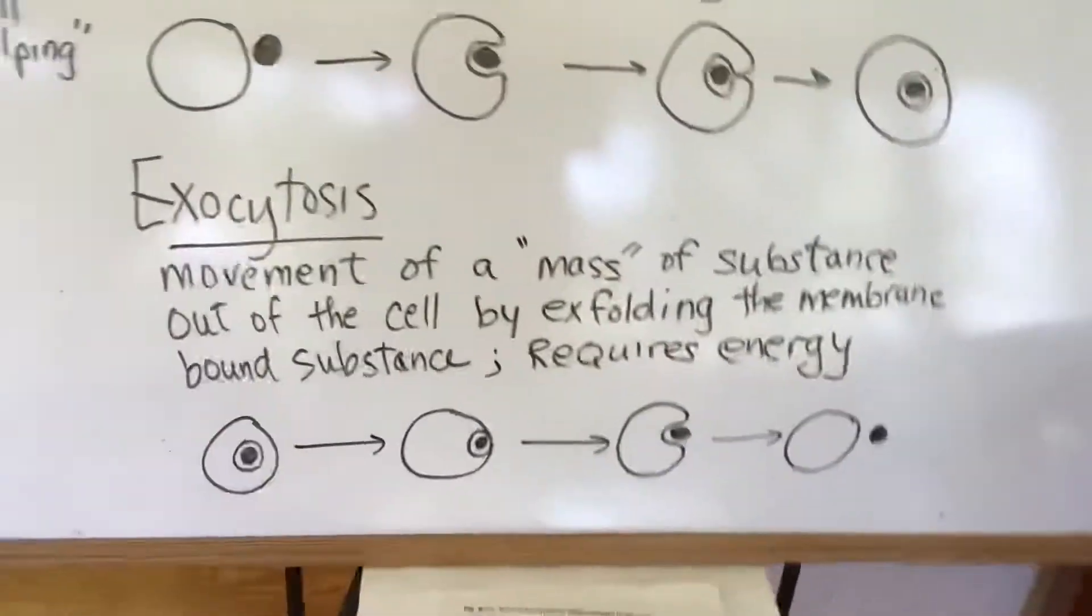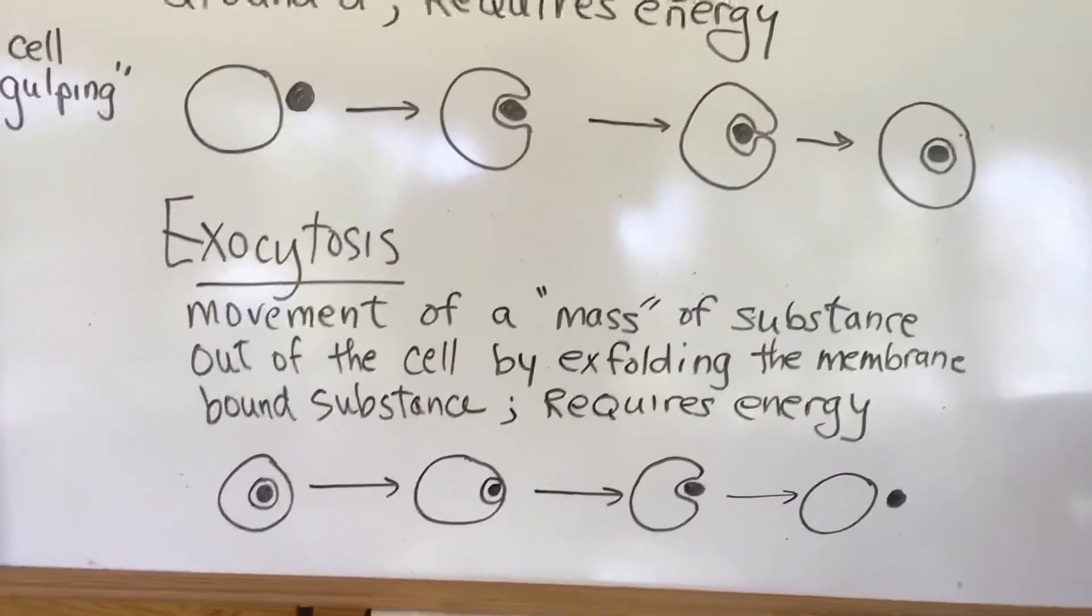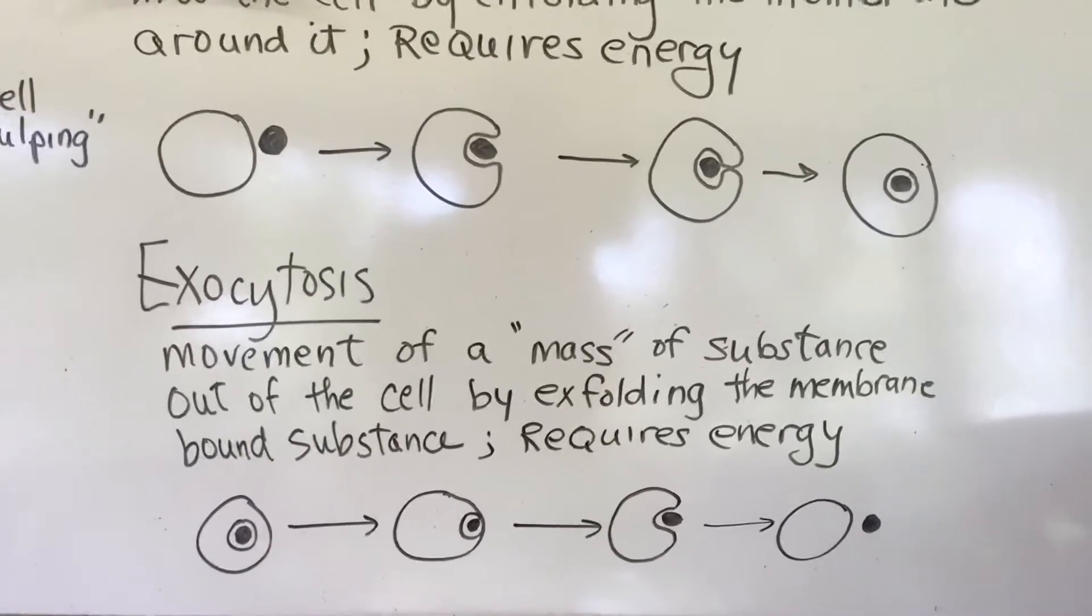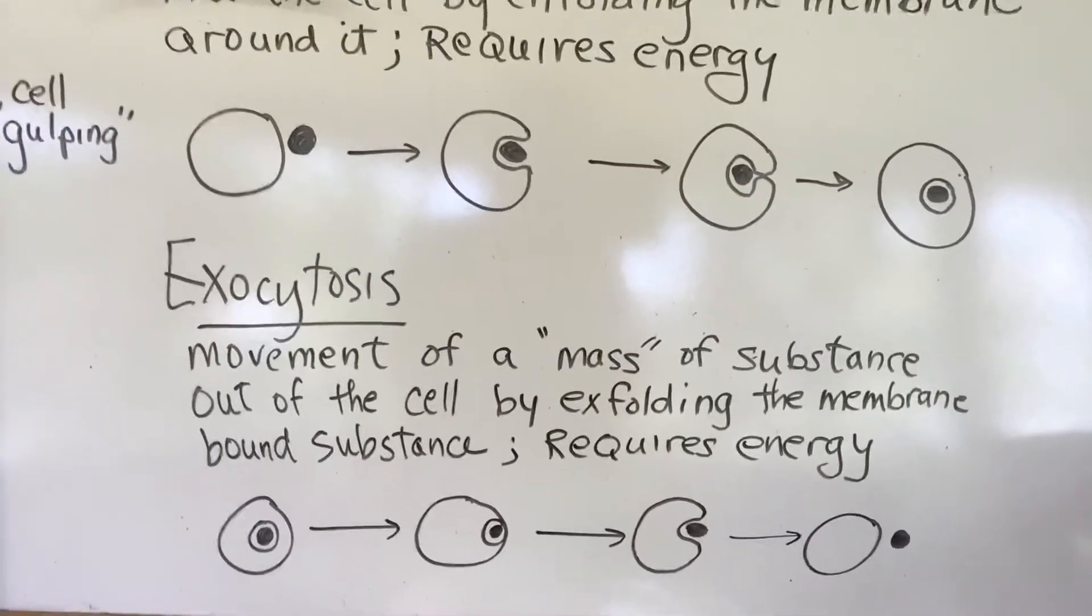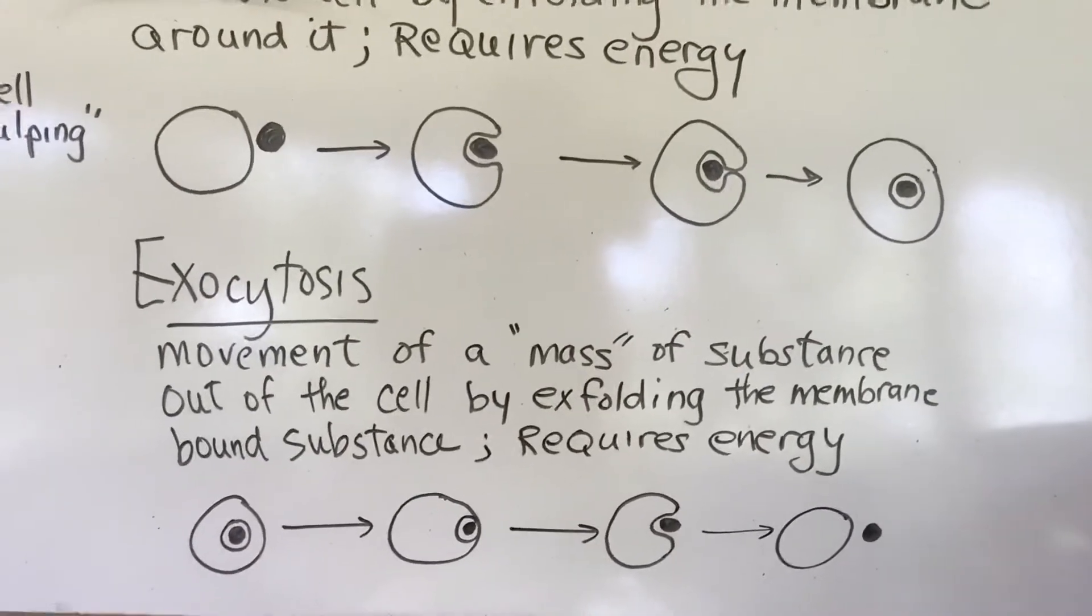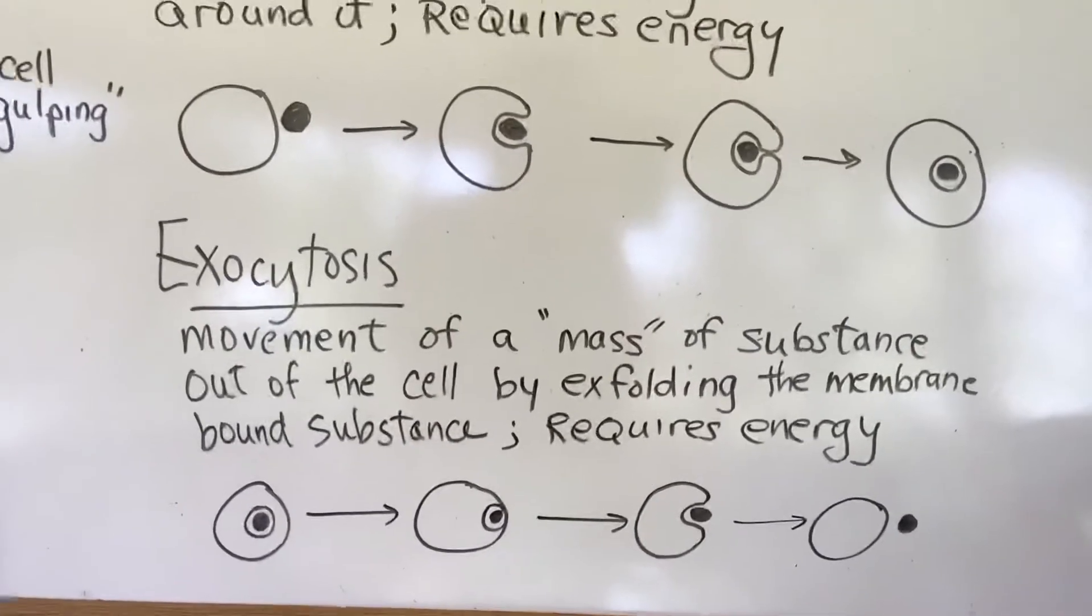So this is one of the ways for example your stomach creates - stomach cells will create enzymes that is in lysosomes from the Golgi apparatus. So big sacks of protein or enzymes that will then be dumped into your stomach cavity to help digest your food. So that's just an example of exocytosis.